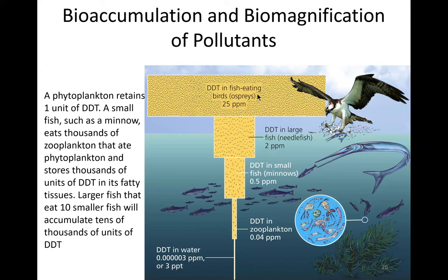Large predatory birds catch and eat many fish. An osprey, for example, will ultimately have about 25 parts per million of DDT in its body — actually a lot — and large predatory birds can die from DDT poisoning. That is biomagnification: the bioaccumulation of DDT in fatty tissue at each organism level, causing large predatory animals, especially birds, to die from pesticide poisoning.